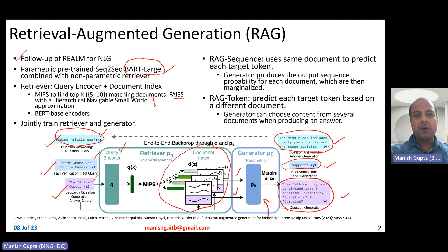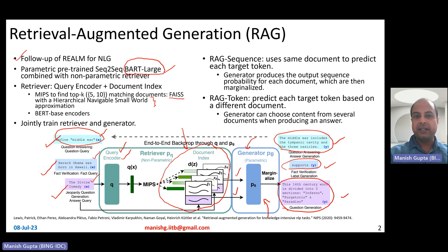In short, the RAG model combines a parametric pre-trained NLG BART large generator model along with a non-parametric retriever. The retriever contains two parts: a query encoder and a document index. The document index uses the MIPS scheme — maximum inner product similarity — to find the top-k matching documents. The experiments have been done using five or ten matching documents.